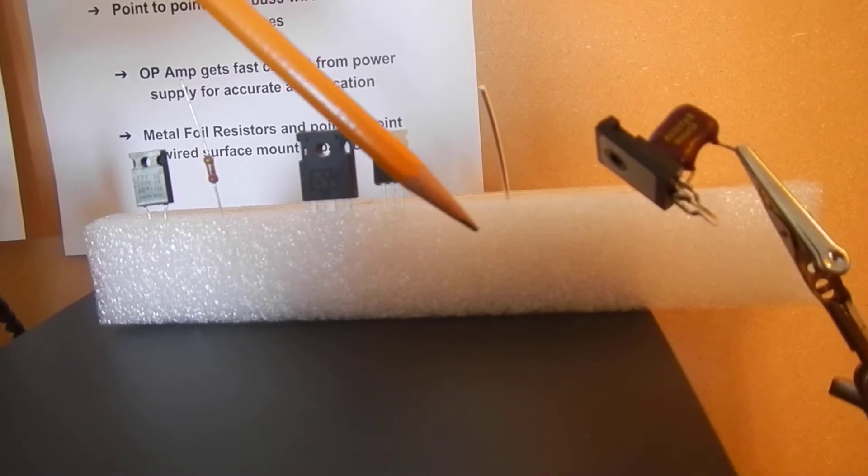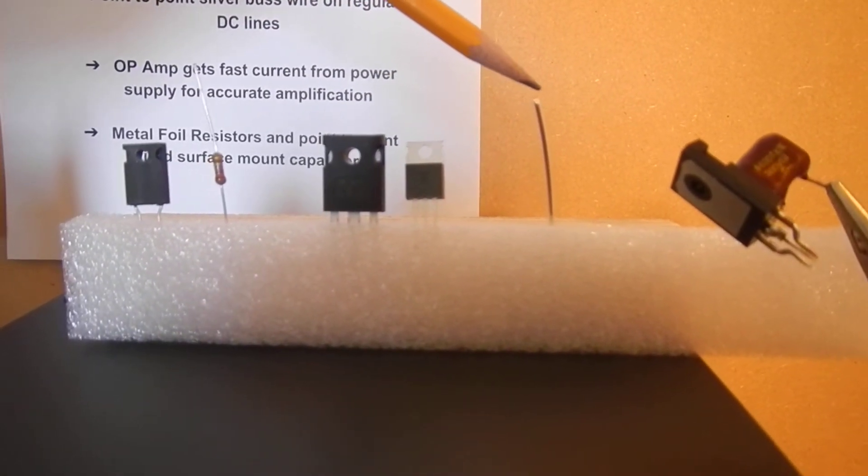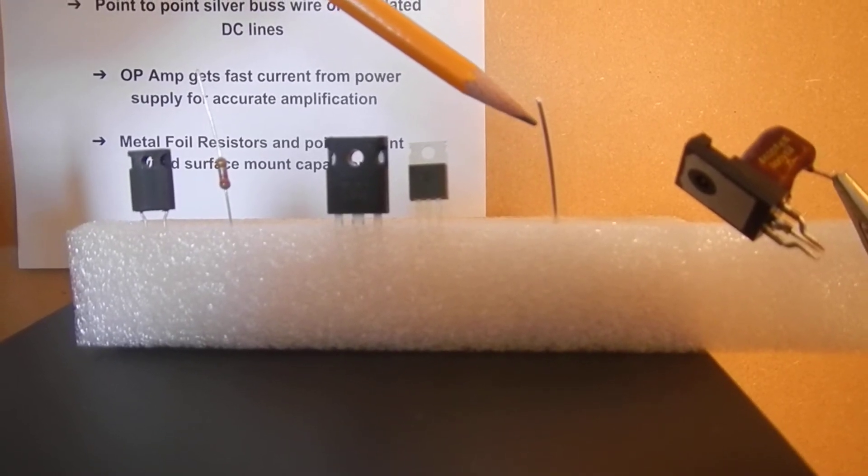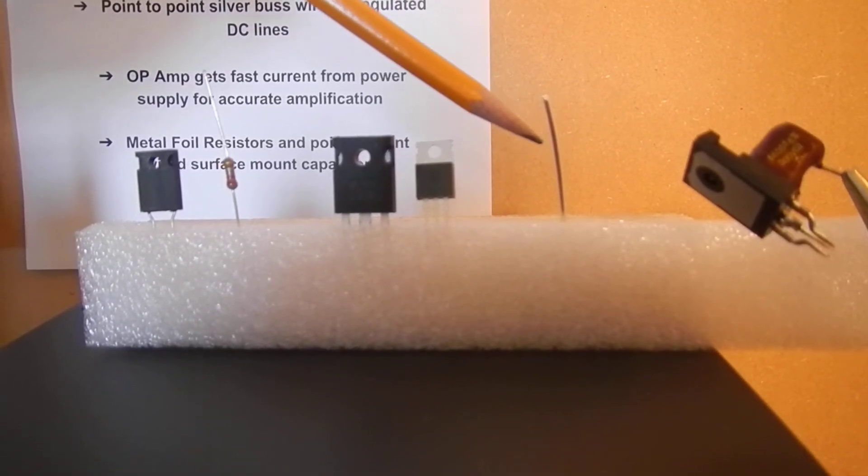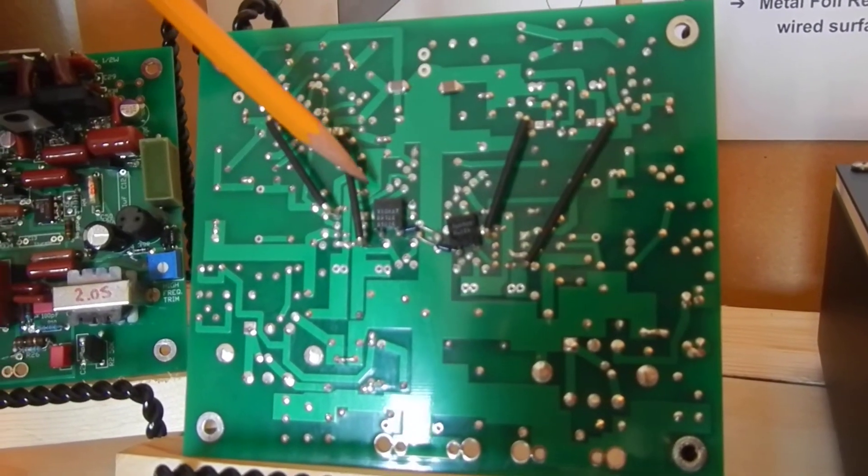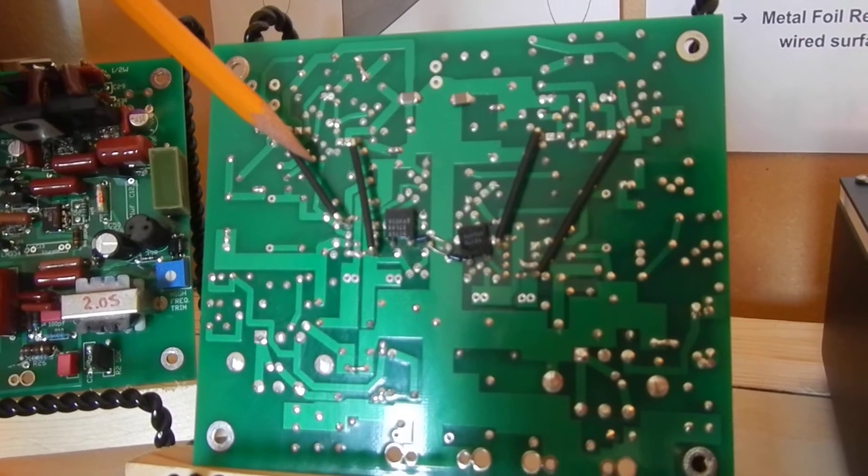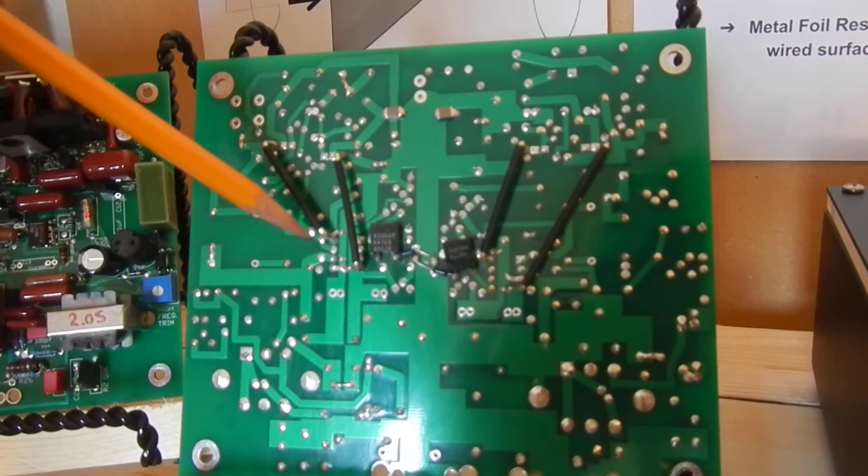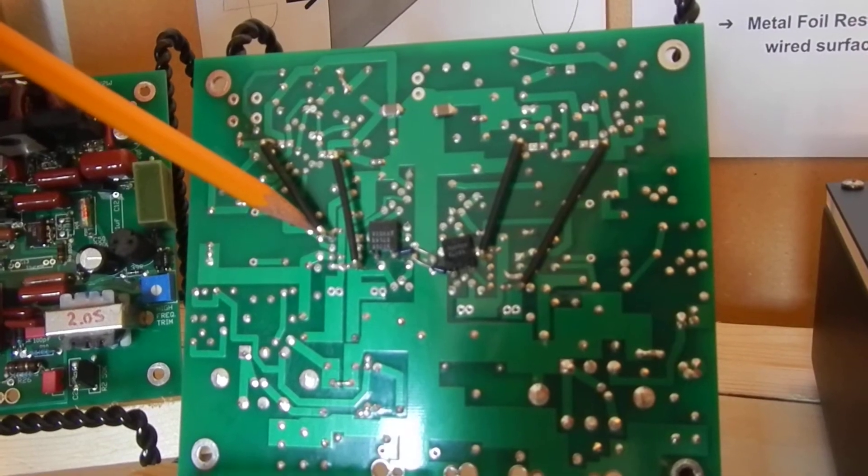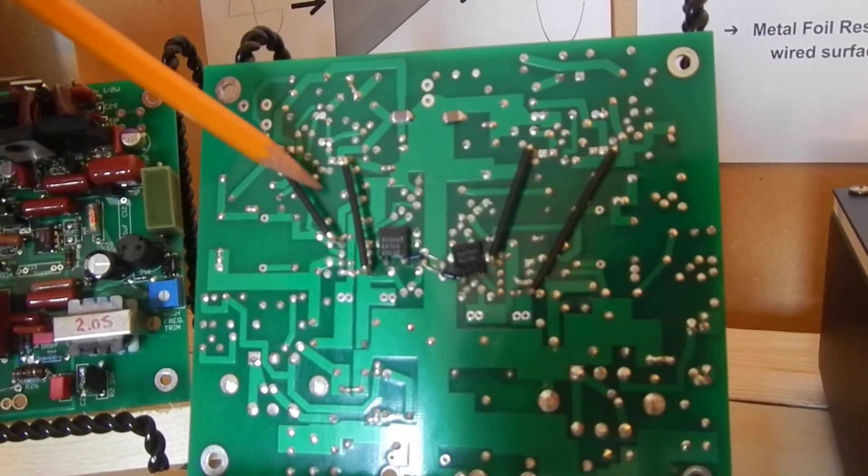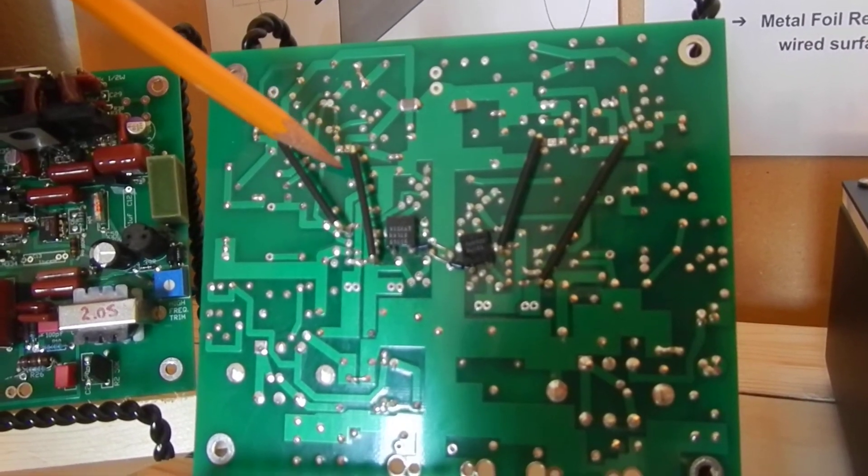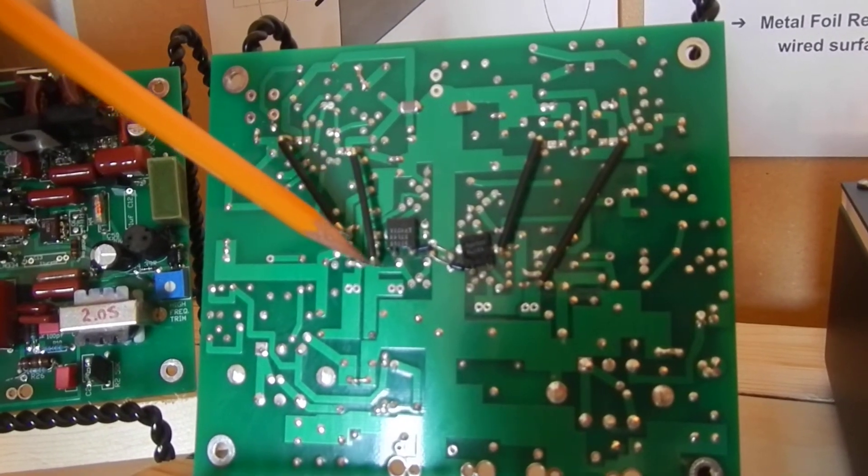The last leg of our power supply is silver bus wire. We point-to-point wire the silver bus wire on the PC board in four places. One, two, three, and four. This allows the current to pass very freely from the transistor straight to the power supply pins of the op-amp with no contact to the PC board. This is a very low impedance, very free-moving mode for the current to run to the op-amp.